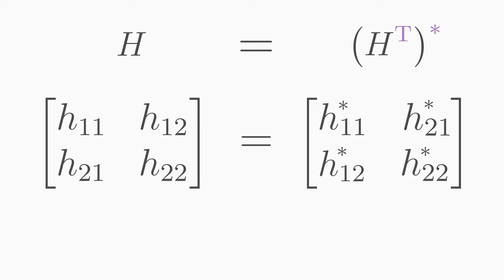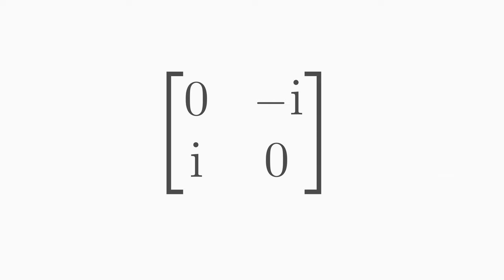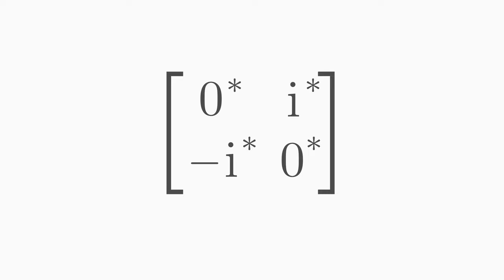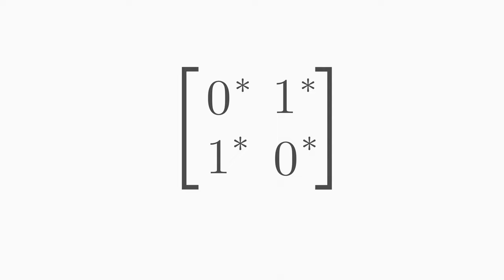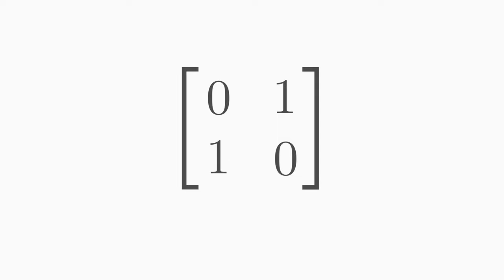Let's make a few examples. Here we see a Pauli-Sigma-Y matrix. This is clearly a Hermitian matrix, because if we transpose it and complex conjugate all the elements, we get back the same matrix. This is a Pauli-Sigma-X matrix. This is a real matrix because it does not contain complex components. This is also a Hermitian matrix, because if we transpose it and complex conjugate all the elements, we get back the same matrix. You can also see from this example that real Hermitian matrices are equivalent to symmetric matrices.